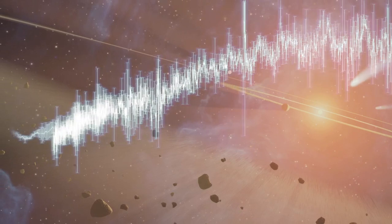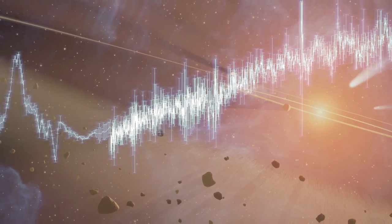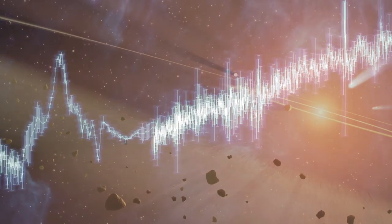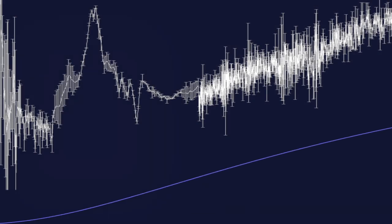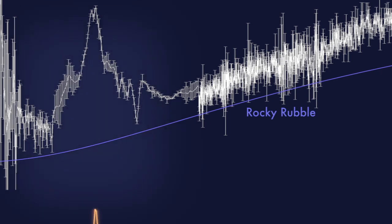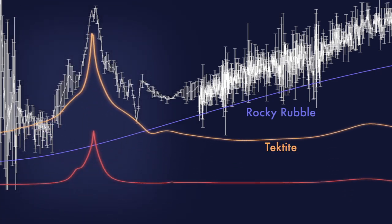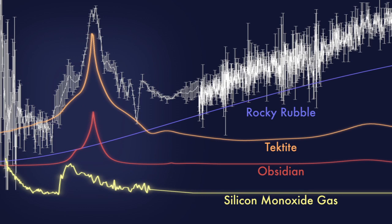Studying its spectrum, Dr. Liss and his colleagues realized they had found something very peculiar that they had not seen around other stars. Aside from the usual indicators of rocky rubble, they found features corresponding to tektite, obsidian, and silicon monoxide gas.